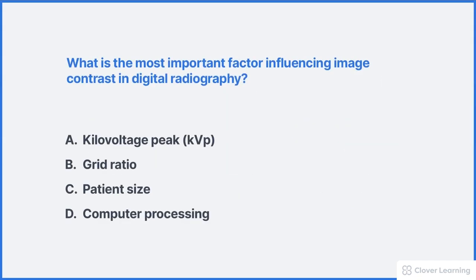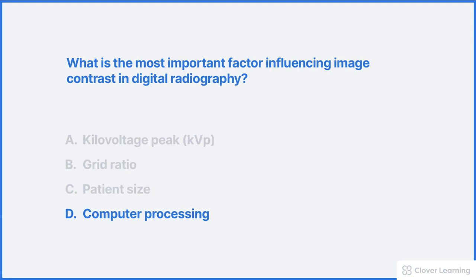Here's a quick practice question so you can test your knowledge: What is the most important factor influencing image contrast in digital radiography? The correct answer is D, computer processing. KVP, grid ratio, and even patient size all have an influence on image contrast, but computer processing has the greatest influence. Modern radiography systems are so effective at measuring signal differences in the remnant beam that other factors have a much smaller effect on image contrast.